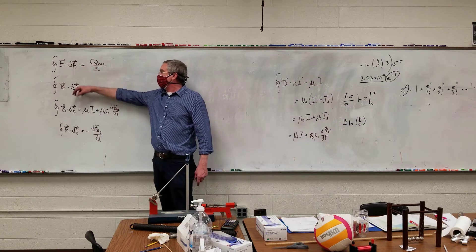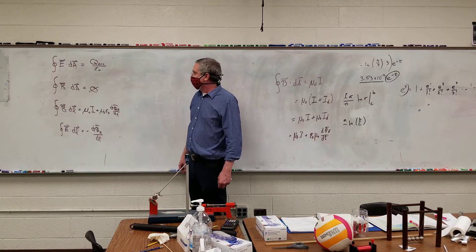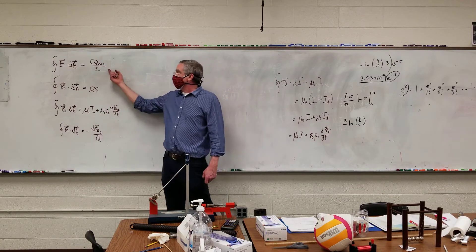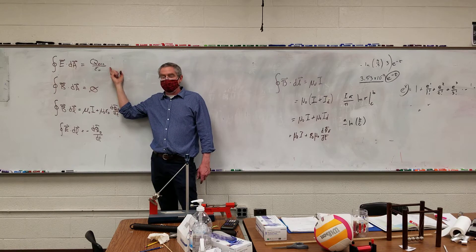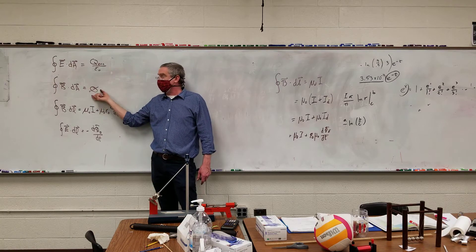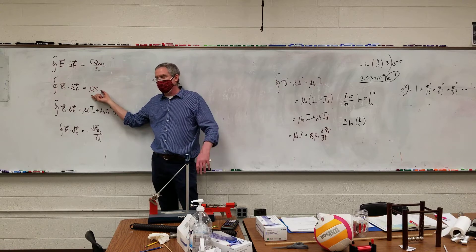Notice the parallels here. We've got E dot dA, B dot dA, B dot dL, E dot dL. Because we can have electric monopoles - in other words charges - it's equal to something other than zero. But we can't have magnetic monopoles - there are no magnetic monopoles that have been found.